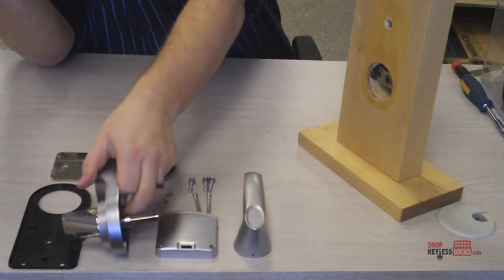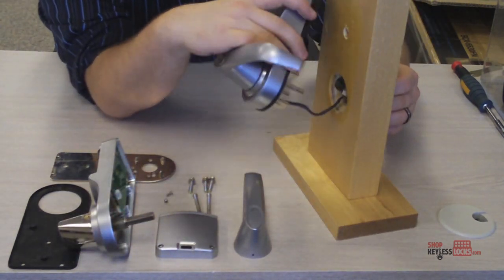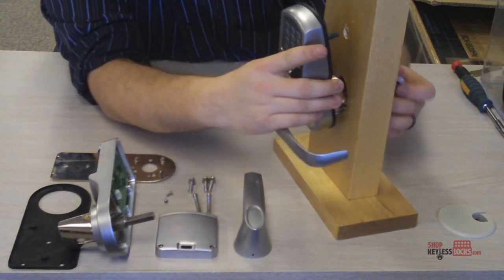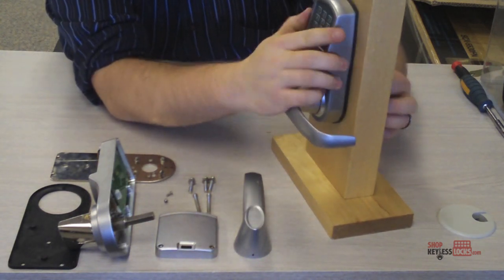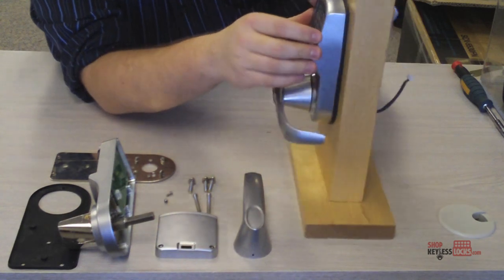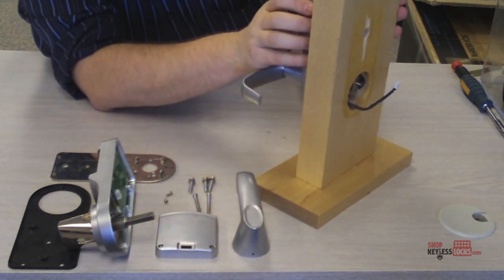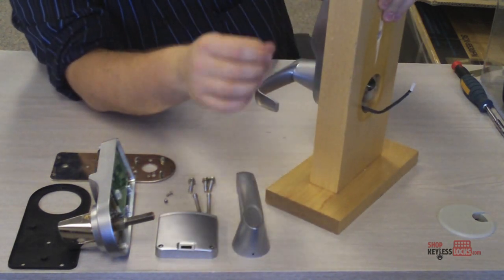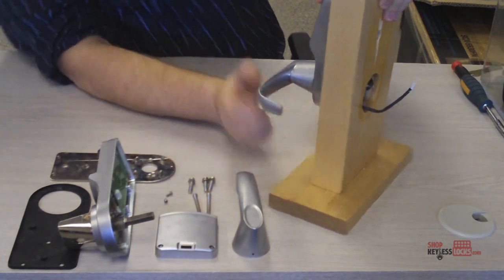Then you feed the power cable under the plunger and then just sit the lock in, and again make sure the weather stripping is all the way around the lock.